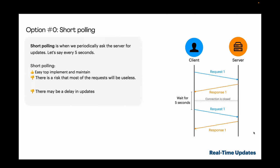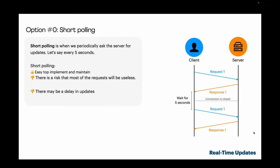Short polling is simply periodically asking the server for updates, for example every 5 seconds. It is easy to implement, but most requests will be unnecessary and updates are not received immediately if they occur at the start of a new interval. This option is unsuitable for us – updates may occur infrequently, and sending requests every 5 seconds is an inefficient use of resources.